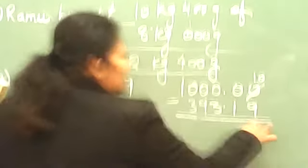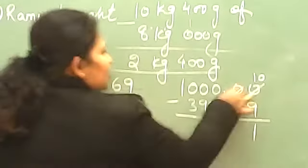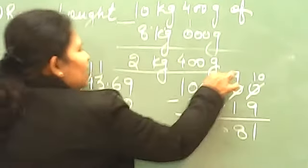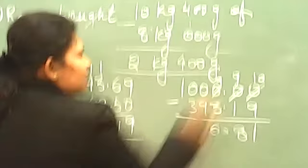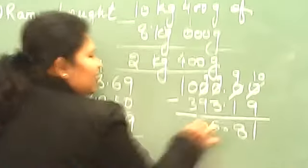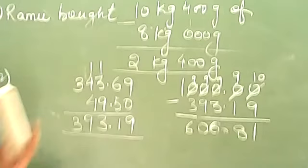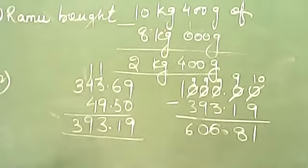It will give you 10 minus 9 which will give you 1. 9 minus 1, it will give you 8. 9 minus 3, it will give you 6. 9 minus 9, it will give you 0. And 9 minus 3, it will give you 6. 606.81.